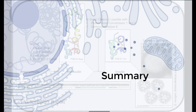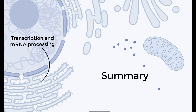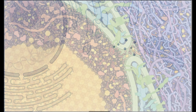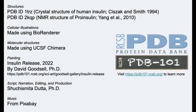Genes coding for secretory proteins like insulin are transcribed and processed to form mRNA in the nucleus, then directed to ribosomes on the rough endoplasmic reticulum for translation. Several post-translational steps help form the mature protein that is either released from the cells immediately or stored until the protein is needed.